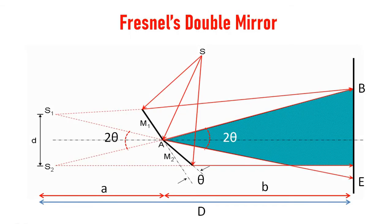This is the diagram of Fresnel's double mirror experiment. This is the source of light S. There is mirror M1 and mirror M2.